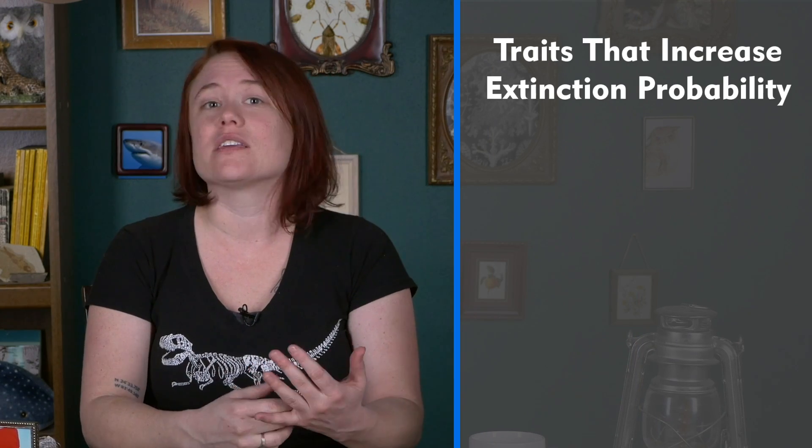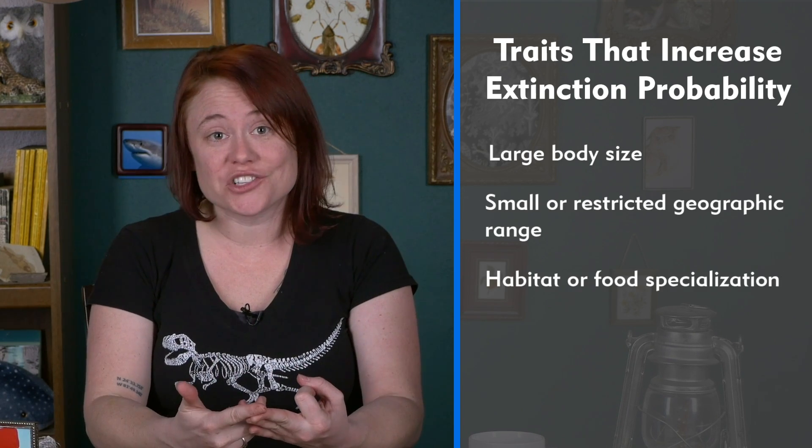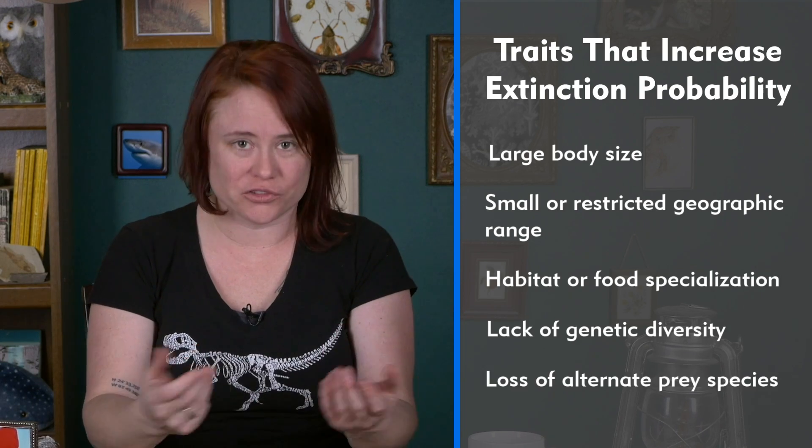Also, reproduction matters. If you have a species with low fecundity — that's the actual reproductive rate — that's an issue. Another trait making species more vulnerable to extinction is dependence on unpredictable resources: if a species has a food or habitat preference that's really variable, this can lead to higher vulnerability. And as the human population continues to grow, species more vulnerable to human persecution are at a higher chance of extinction. Other traits that increase extinction probability include larger body size, small or restricted geographic range, habitat or food specialization, lack of genetic diversity, and loss of alternate prey species.